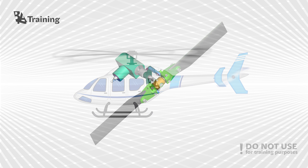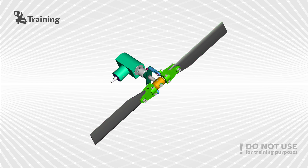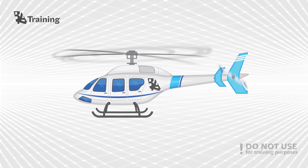Tail rotor: the tail rotor is a smaller rotor mounted so that it rotates vertically or near vertically at the end of the tail of a traditional single rotor helicopter. The tail rotor's position and distance from the center of gravity allows it to develop thrust in a direction opposite to the main rotor's rotation to counter the torque effect created by the main rotor. Tail rotors are simpler than the main rotor since they require only collective changes in pitch to vary thrust. The pitch of the tail rotor blades is adjustable by the pilot via the anti-torque pedals, which also provide directional control by allowing the pilot to rotate the helicopter around its vertical axis, thereby changing the direction the craft is pointed at.